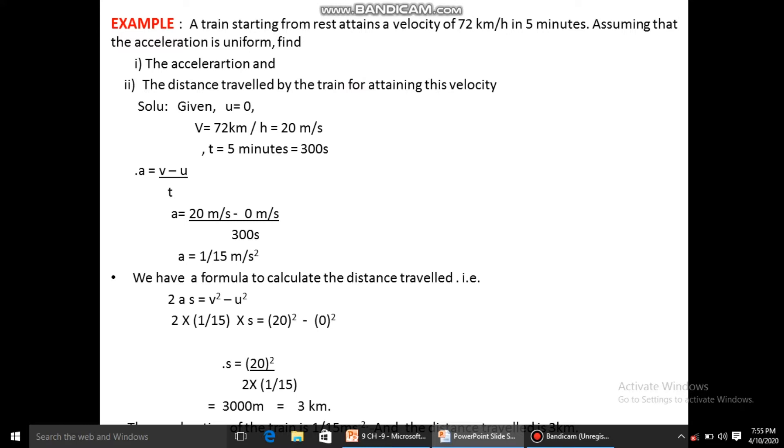First we have to note down the given conditions: initial velocity u is zero, final velocity is 72 km per hour. We have to convert this km per hour into meter per second, and time is five minutes which equals 300 seconds.